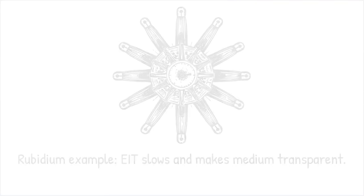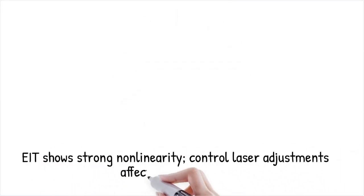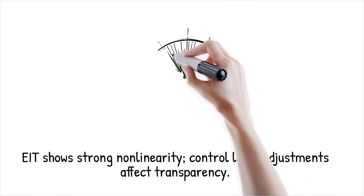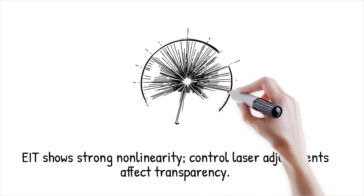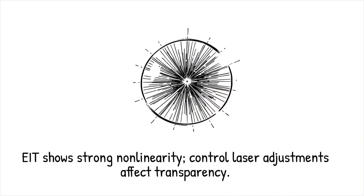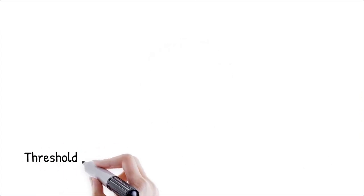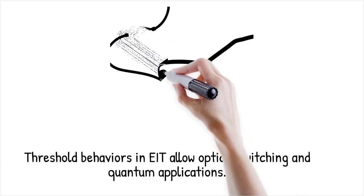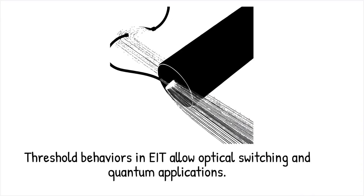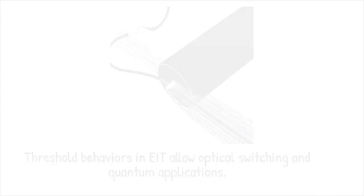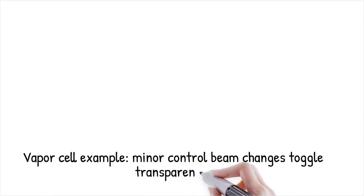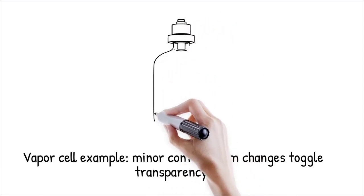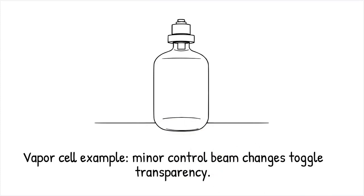EIT exhibits strong optical non-linearity even at low light intensities due to the steep dispersion and narrow bandwidth of the transparency window. Slight variations in the control laser's power or detuning can switch the medium between opaque and transparent states. These threshold-like behaviors enable low-power all-optical switching and modulation. The inherent non-linearity of EIT is key for applications in quantum information processing — changing the control beam intensity by just a few percent can toggle transparency on and off in a vapor cell, like a light dimmer that with a tiny adjustment flips the entire room's lighting from dark to bright.